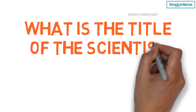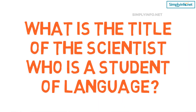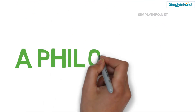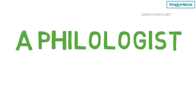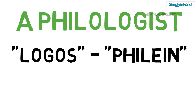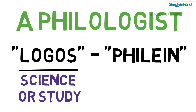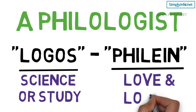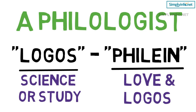What is the title of the scientist who is a student of language? A philologist. It is derived from the Greek word logos, which means science or study, and may also mean word or speech, as it does in philology. Etymologically, it means the love of words, from Greek philion, to love, and logos.